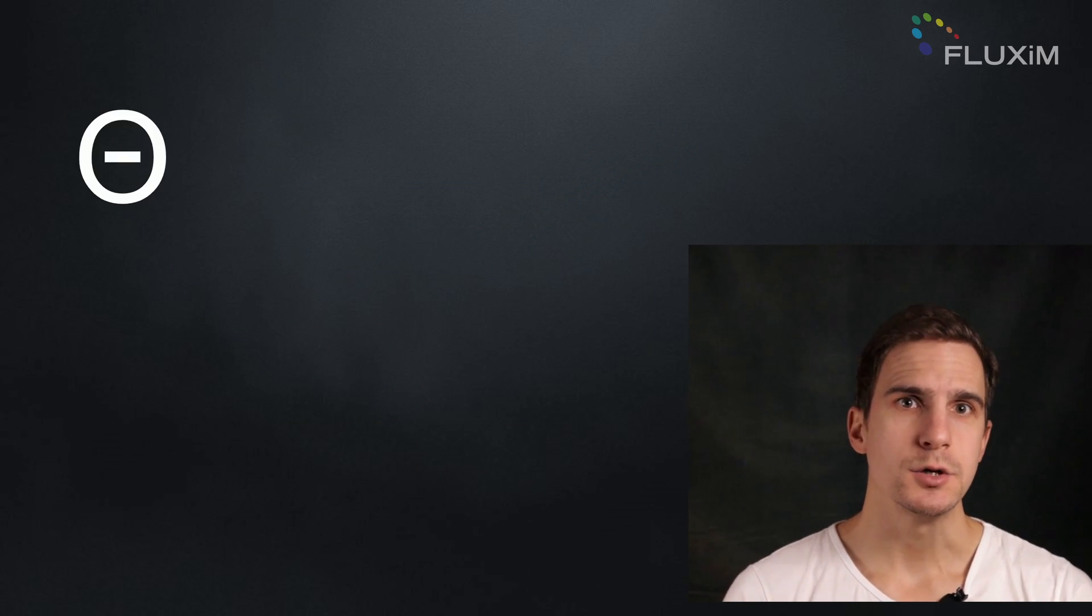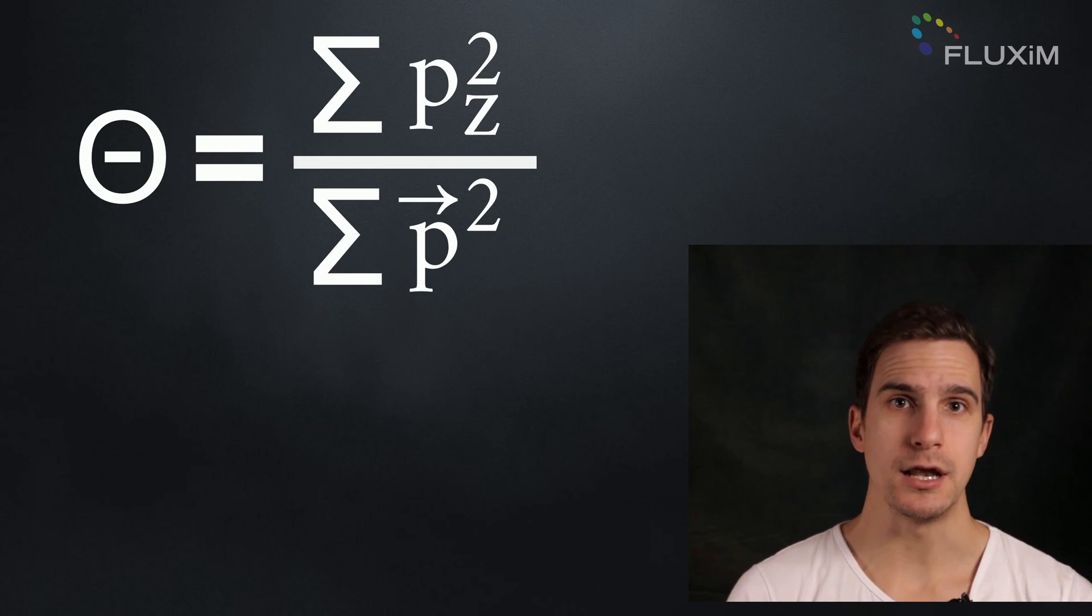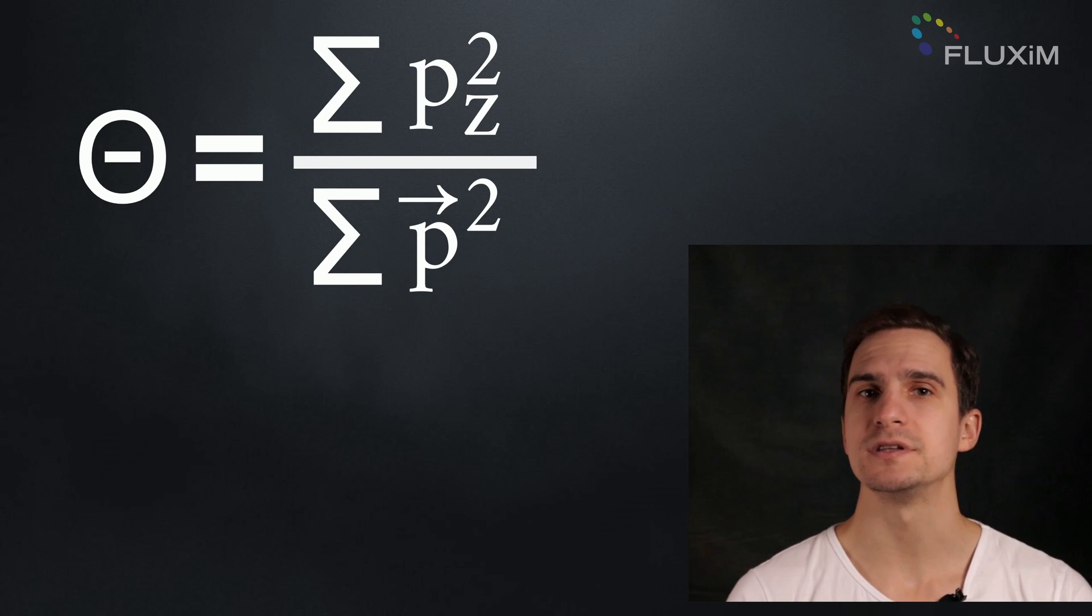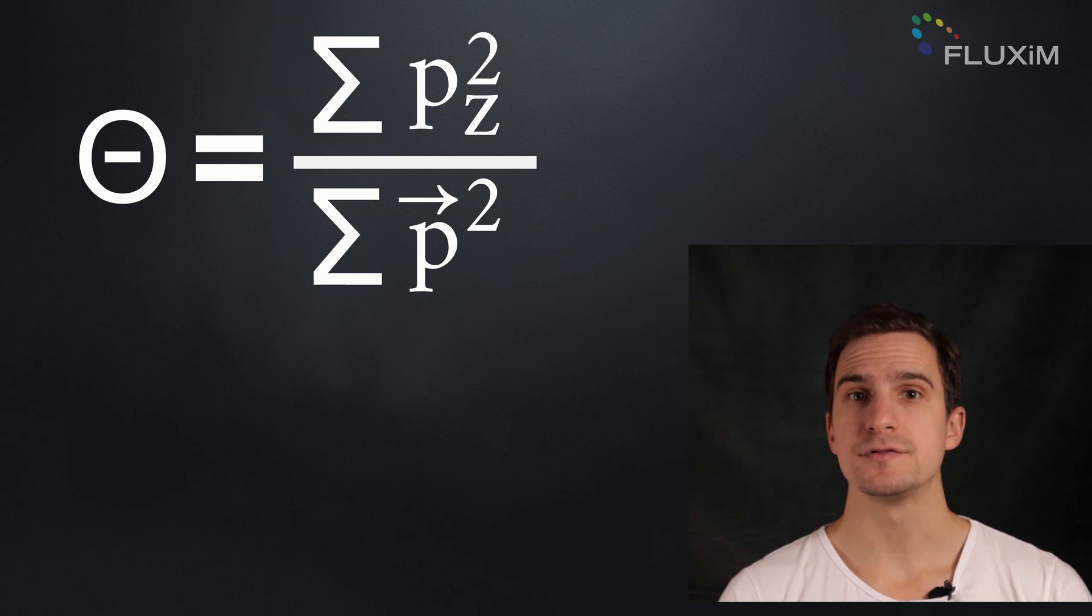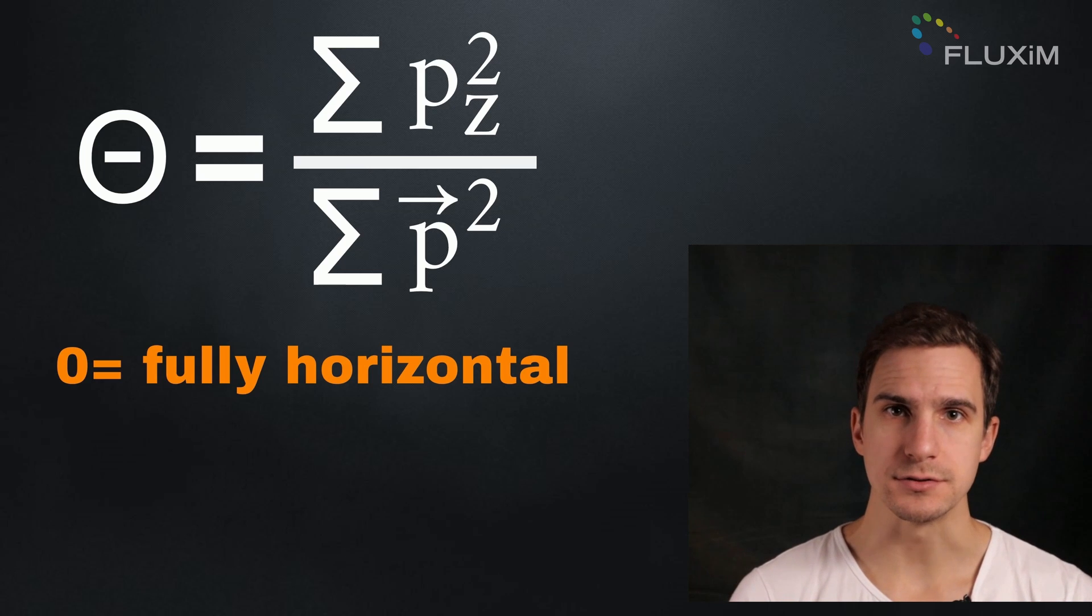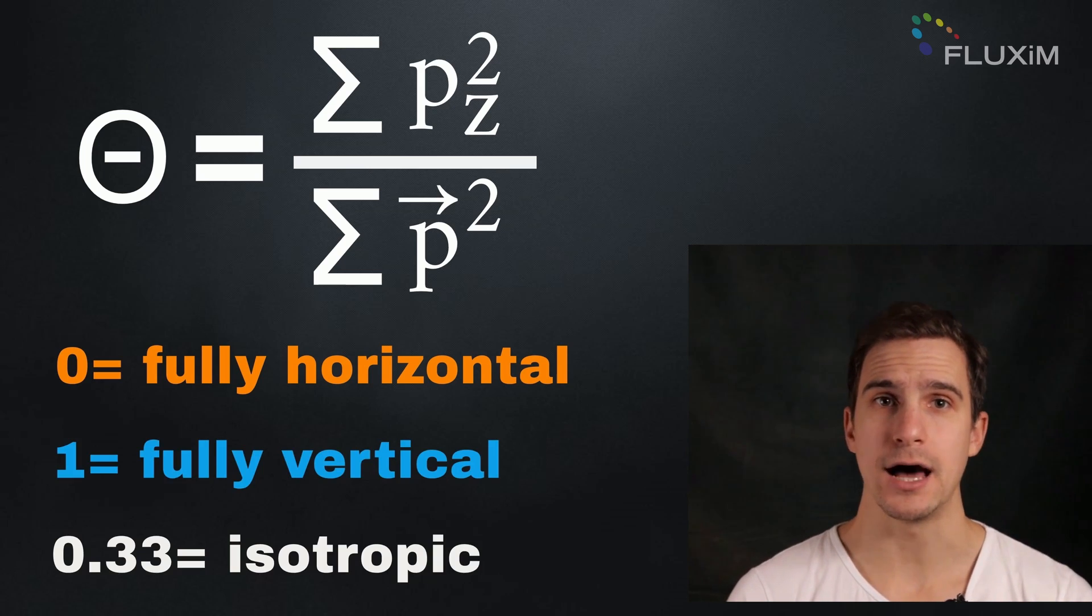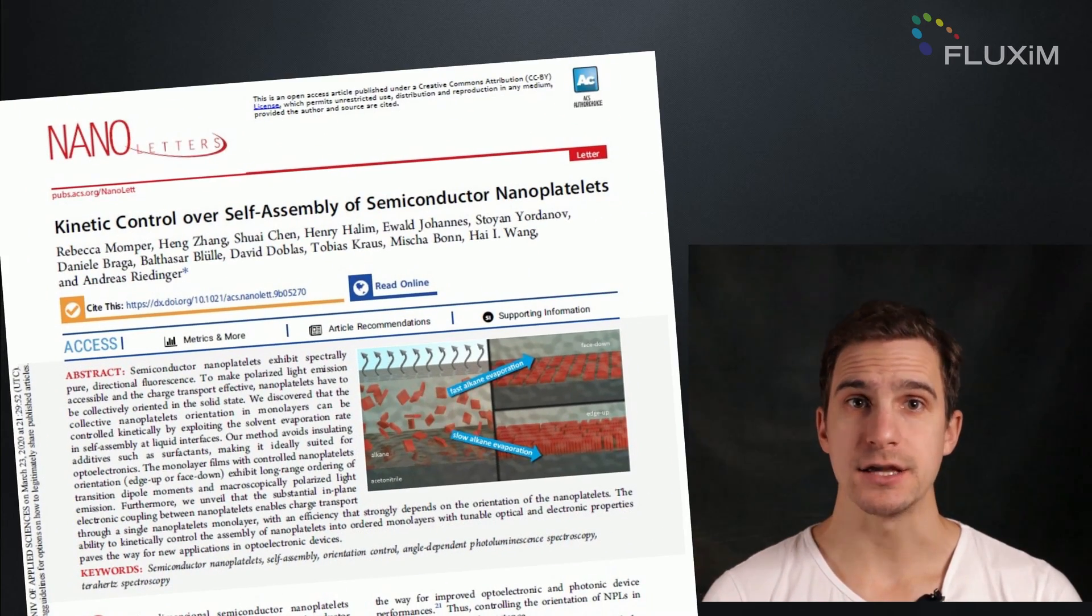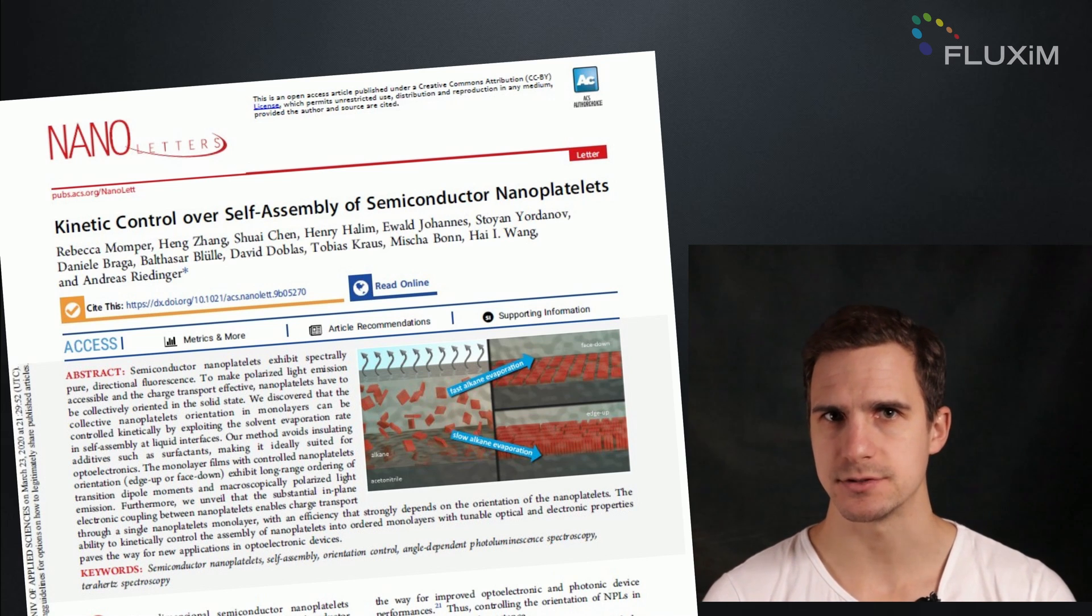The orientation of the dipoles is quantified with theta, which is the average orientation of an ensemble of radiating electrical dipoles with dipole moment p. In our definition, a value of zero represents a fully horizontal, one a fully vertical, 0.33 an isotropic-oriented ensemble. A very similar analysis as on organic molecular film can also give insights into inorganic systems.